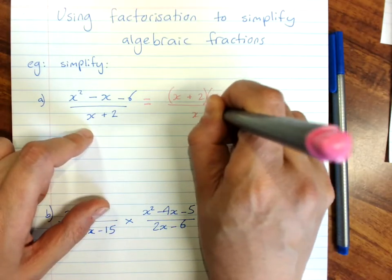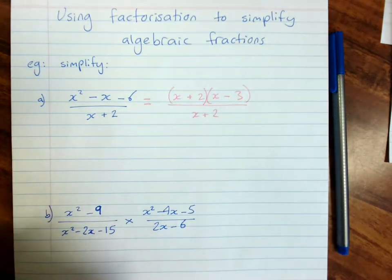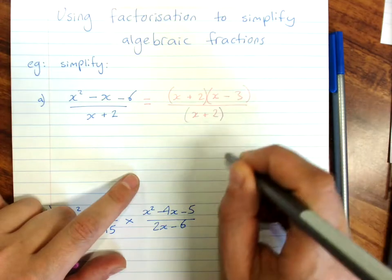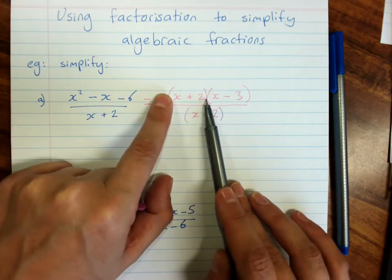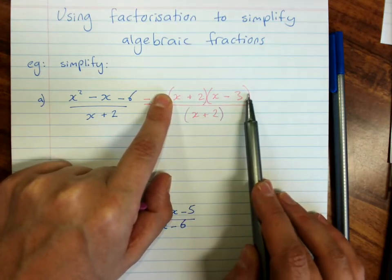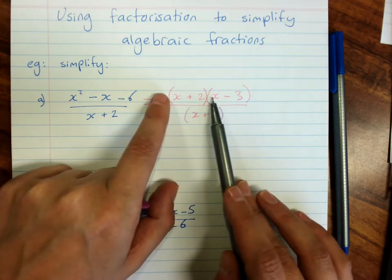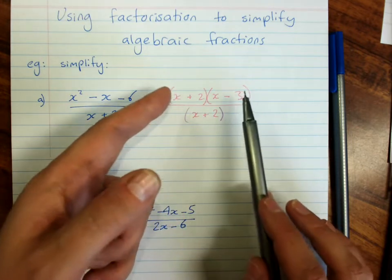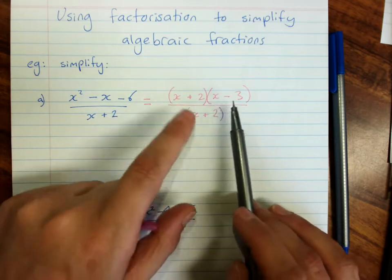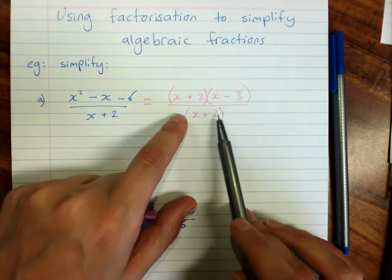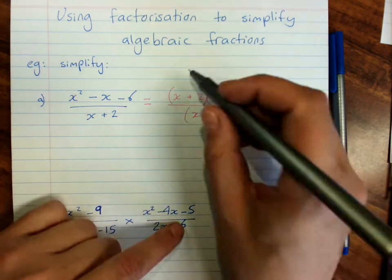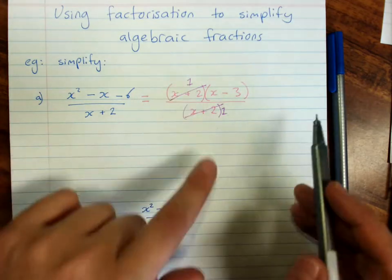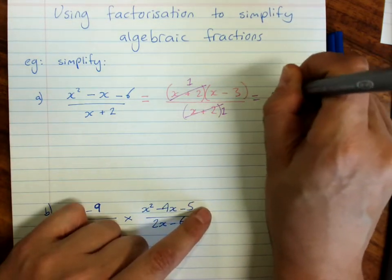And on the bottom I have x plus 2. And as we remember any expression on top or bottom of a fraction can of course have brackets around it. And this is a factor of this expression because this whole expression is x plus 2 times x minus 3. In fact what we did here was we factorized. We put these into factors and this down here is now x plus 2 times 1. So that can cancel to a 1, that can cancel to a 1, and I am left with x minus 3.